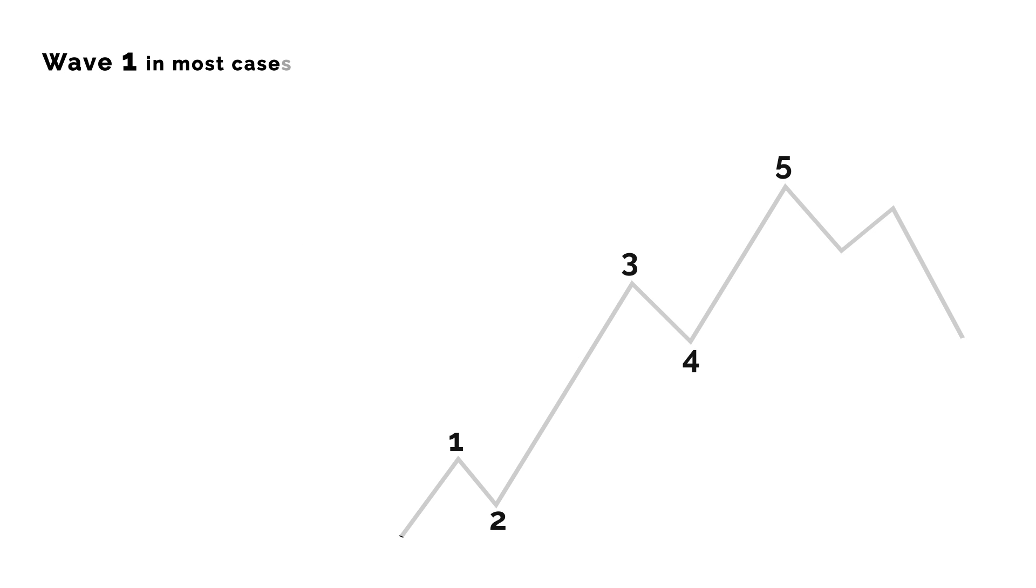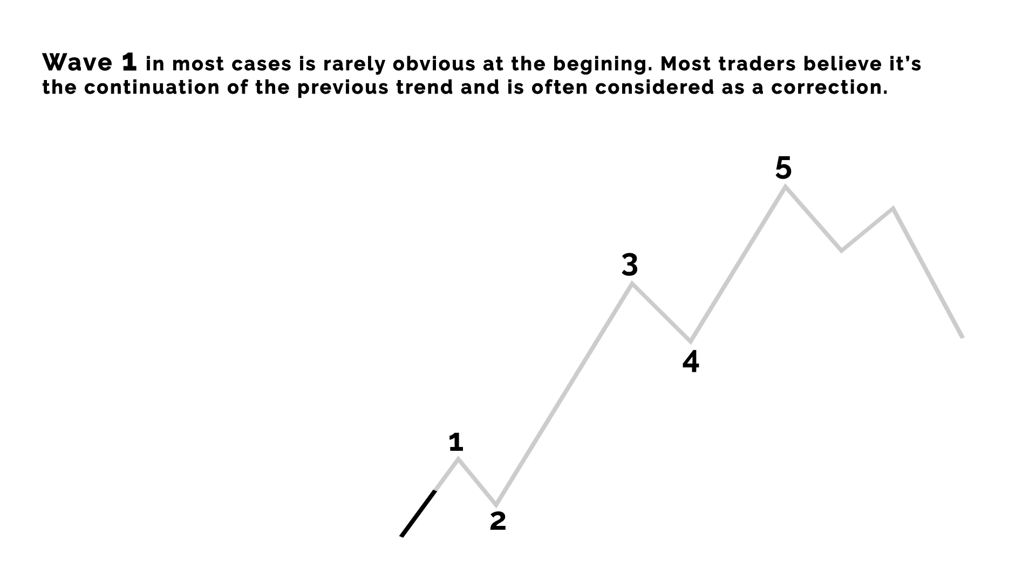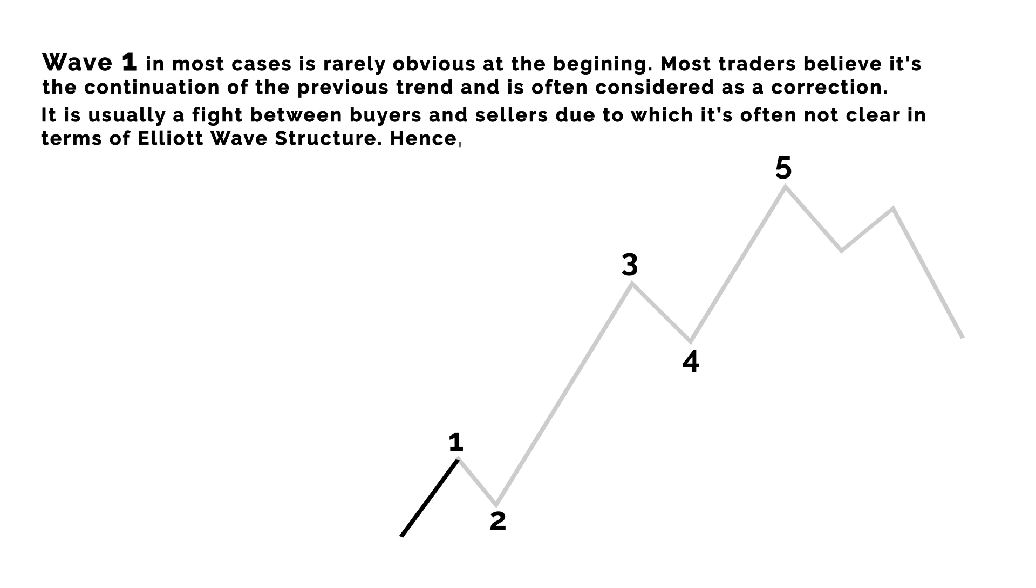Number 1, Wave 1. In most cases, it is rarely obvious at the beginning. Most traders believe it's the continuation of the previous trend and is often considered as a correction. It is usually a fight between buyers and sellers, due to which it's often not clear in terms of Elliott Wave structure. Hence, technical analysts are not normally alerted at this stage.